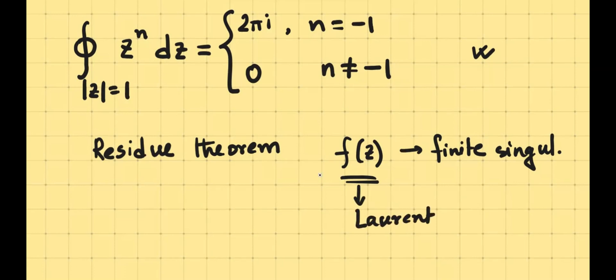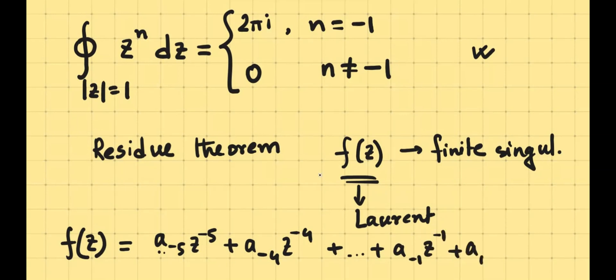then what happens is that you can expand this function in terms of a Laurent series. A Laurent series is somewhat like a Taylor series, but it can have negative powers. So for example, if you have a singularity that would have importance that you're trying to expand the function, then the function can have z to the power negative integer. So for example, it can have a_{-5} z to the power minus 5, plus a_{-4} z to the power minus 4, all the way to a_{-1} z to the power minus 1, plus a_0, plus a_1 z, plus a_2 z squared, and so on. And this number here is called a residue.